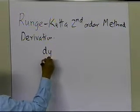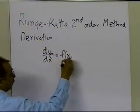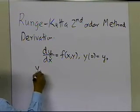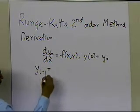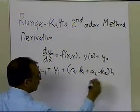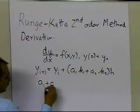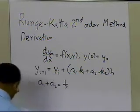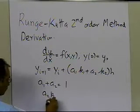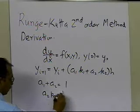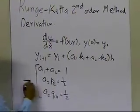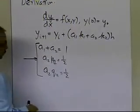Runge and Kutta's second-order method says that if you have a differential equation of this particular form, then you can write down a numerical method to solve for y as a function of x using this general form. It will be second-order accurate, where a1 plus a2 equals 1, a2 times p1 equals 1/2, and a2 times q11 equals 1/2. These are the three equations obtained to plug into this particular equation.